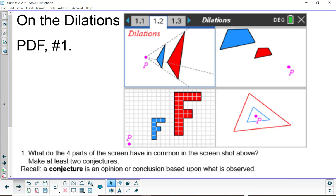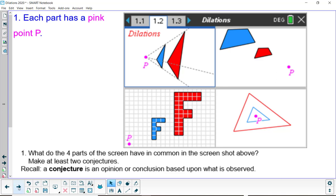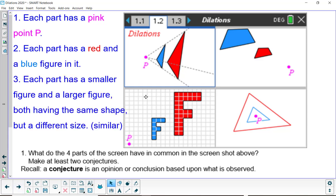Alright, let's look at the answers. Each part does have a pink point P. Each part has a red figure and a blue figure in it. Each part has a smaller figure and a larger figure. They have the same shape but a different size and we call those similar figures.